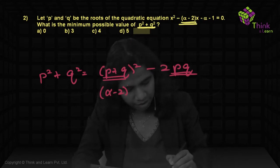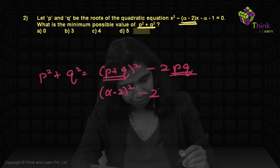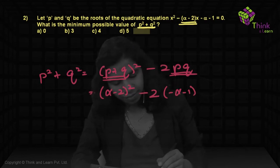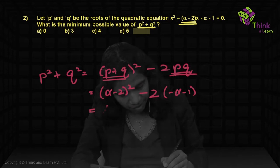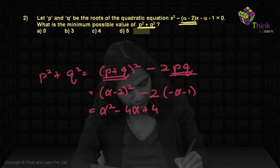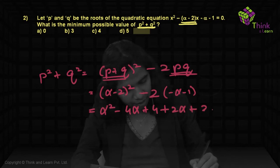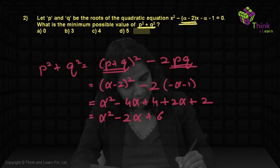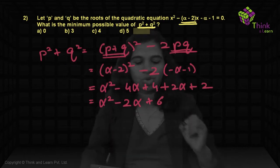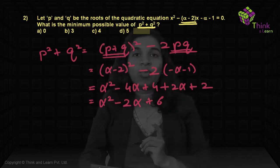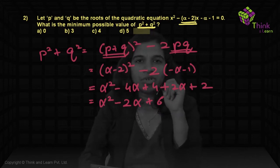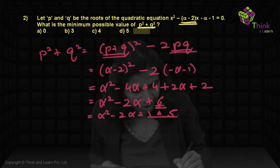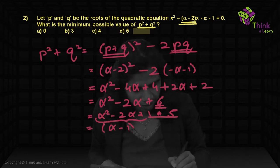So the expression becomes (α − 2)² − 2(α − 1). Expanding: α² − 4α + 4 + 2α + 2, which simplifies to α² − 2α + 6. To find the minimum value, we complete the square: α² − 2α + 1 + 5, which is (α − 1)² + 5. For real numbers, the minimum value of (α − 1)² is zero, so the minimum of the entire expression is 5.